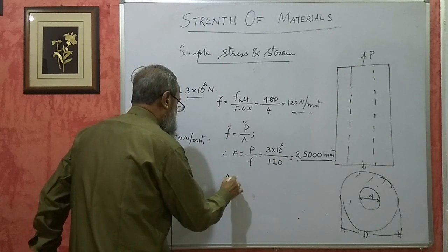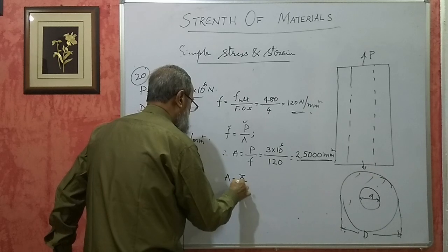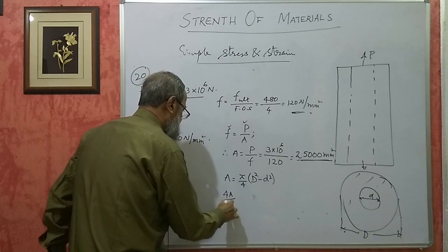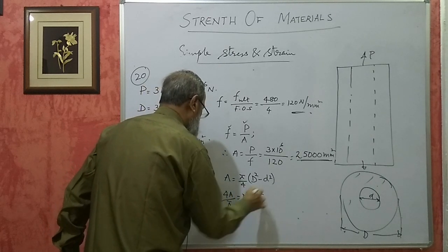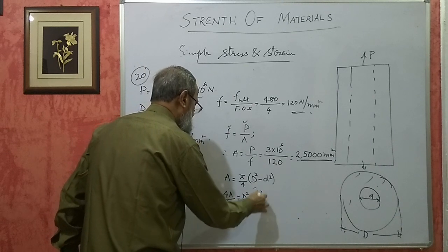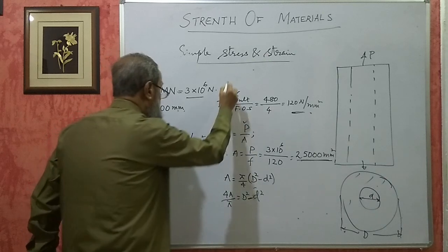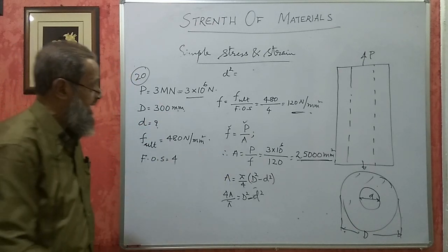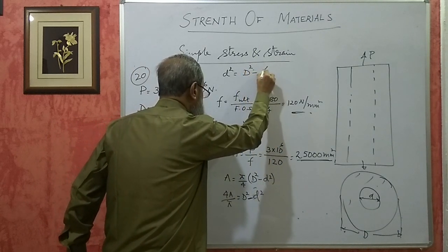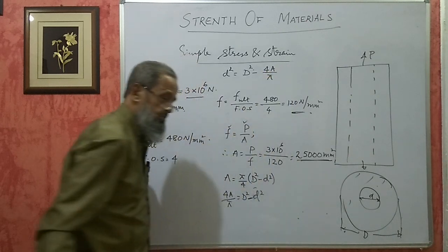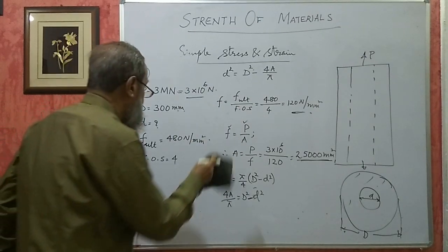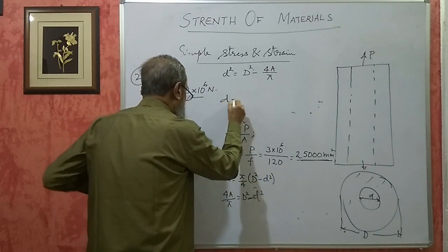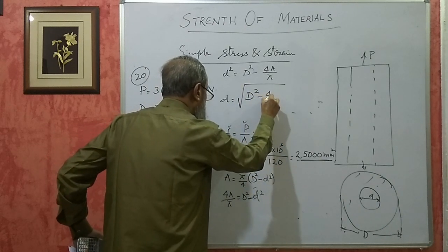The area of a hollow cylinder will be pi by 4 into capital D square minus small d square. So 4A by pi will be equal to D square minus d square. I will take small d to this side, so it becomes D square minus 4A divided by pi. This will give me d square, and the square root of that will give me d.